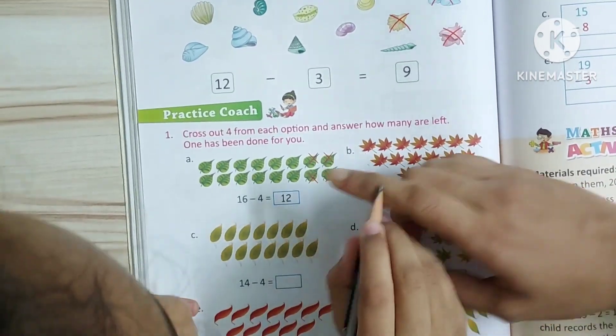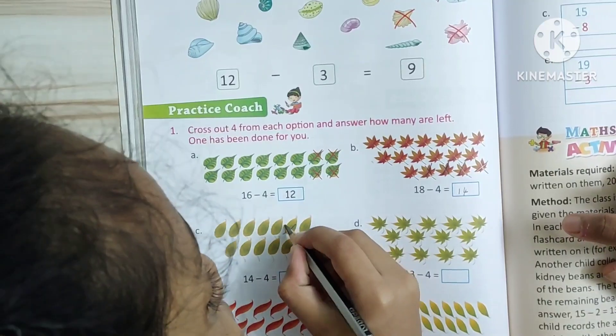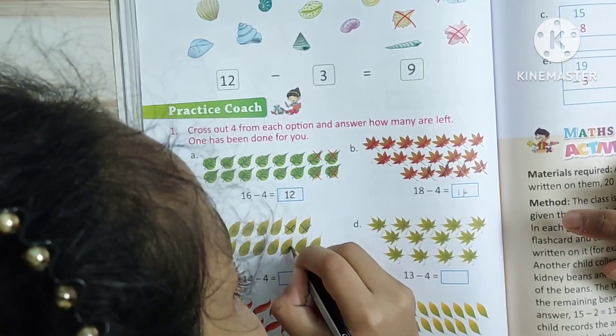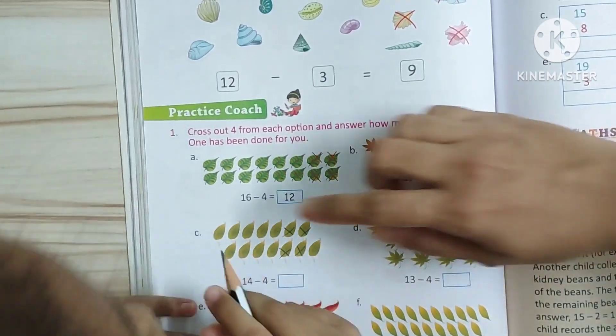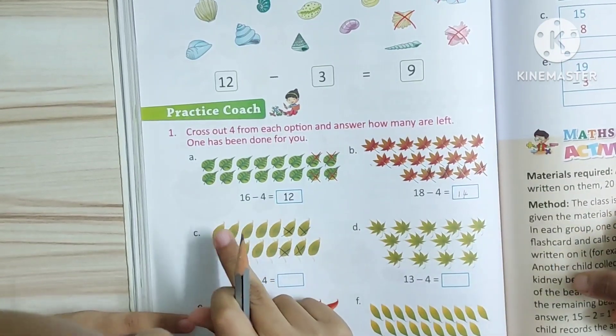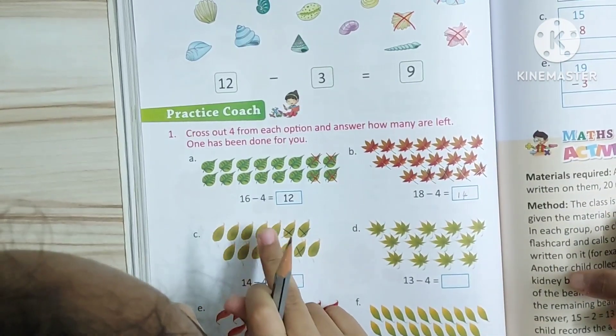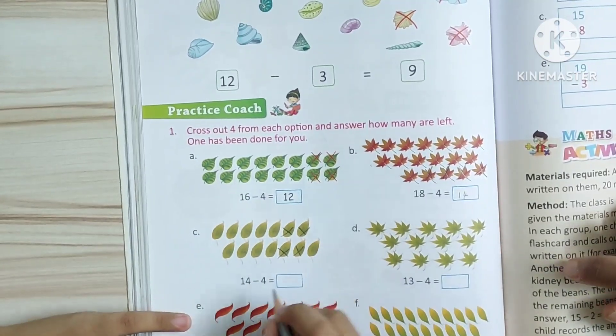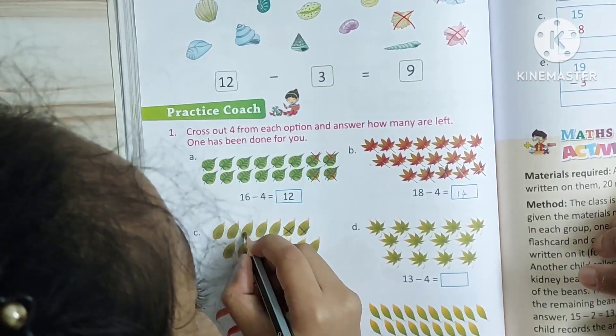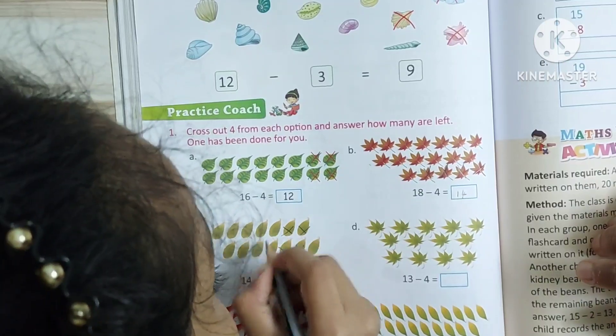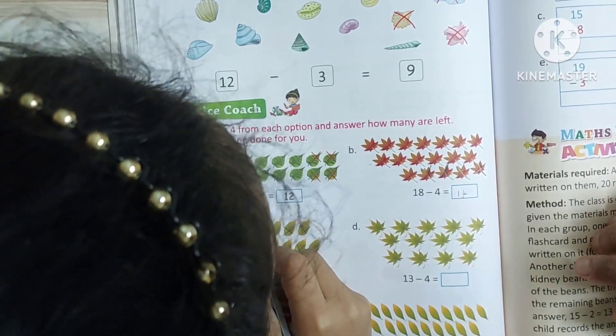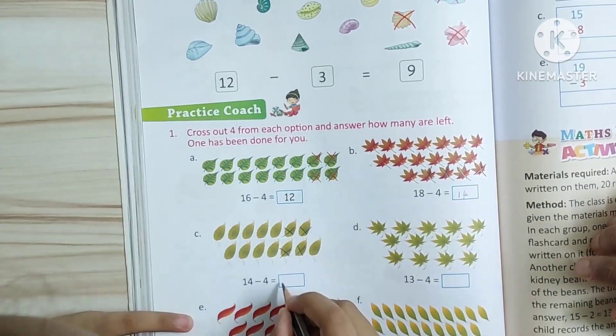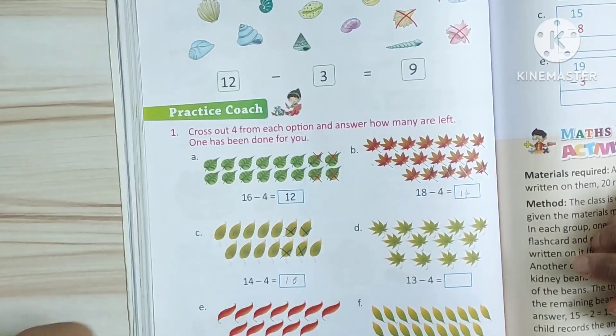In that also, you have to cross out 4. Okay. Now count how many leaves are left. 1, 2, 3, 4, 5, 6, 7, 8, 9, 10. 10.